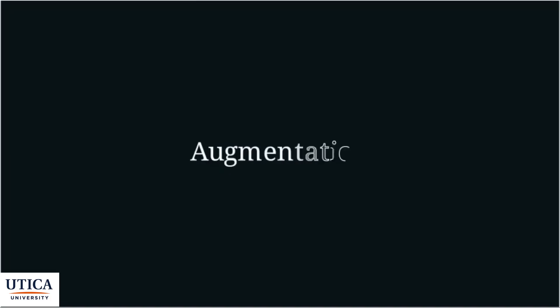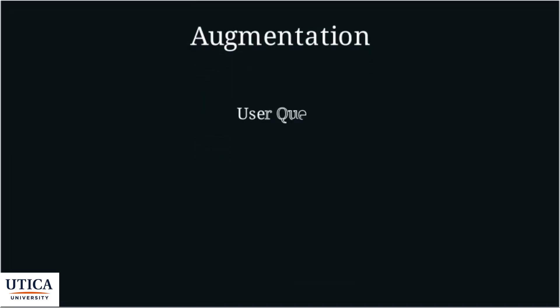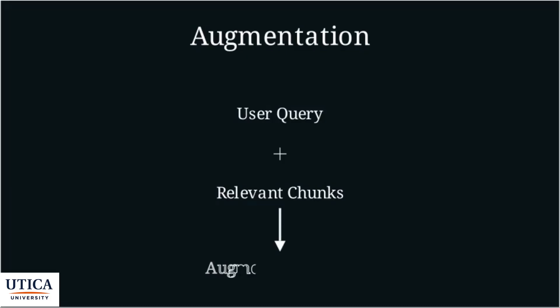Now comes augmentation. The user query and the relevant chunks that were retrieved are combined to create a new, augmented prompt. This augmented prompt provides the LLM with the context it needs to generate a better response. Think of it as giving the LLM a cheat sheet of relevant information before it answers the question.